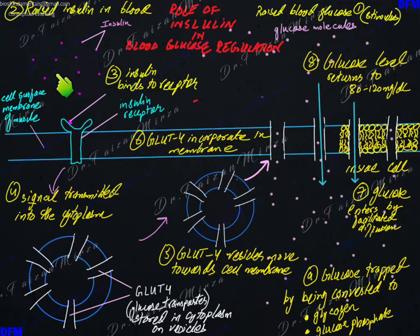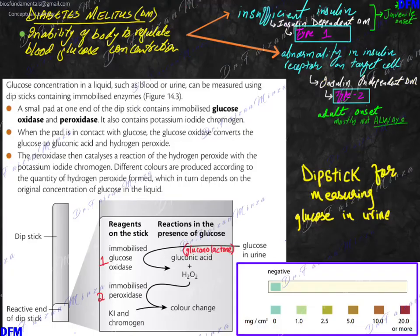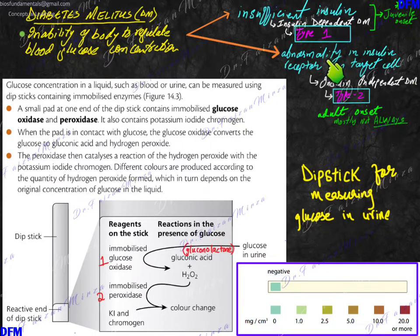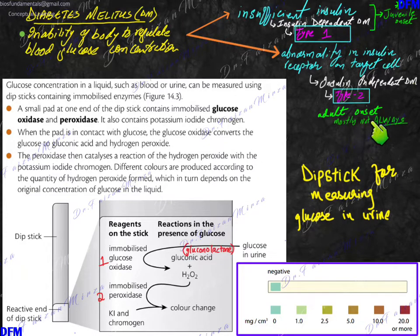There are two types of diabetes mellitus: one in which insulin is not there, and one in which the receptor is not there. Insufficient insulin production is called Type 1 or insulin-dependent diabetes mellitus, and in most cases it is of juvenile onset. Type 2, insulin-independent diabetes, is normally adult onset, but not always.